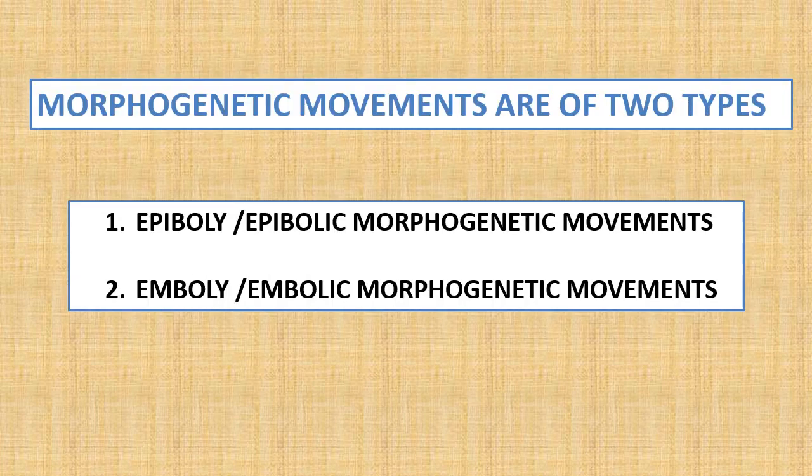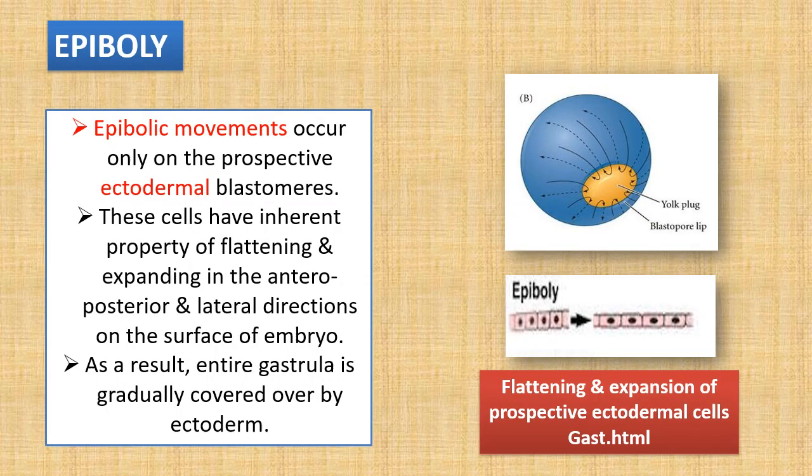Morphogenetic movements are of two types: one is epibolic morphogenetic movements, shortly called epiboly; number two is embolic morphogenetic movements, shortly called emboly. Epibolic movements occur only on the prospective ectodermal blastomeres — it is restricted only to the prospective ectodermal blastomeres. These cells have the inherent property of flattening and expanding in the anterior, posterior, and lateral directions on the surface of the embryo.